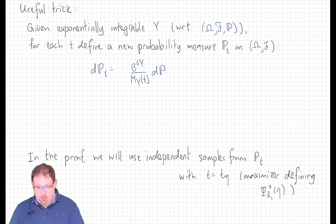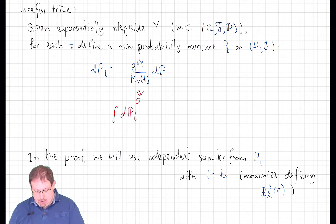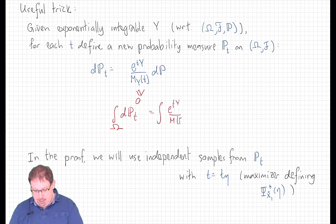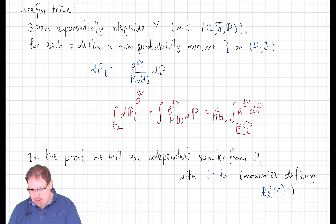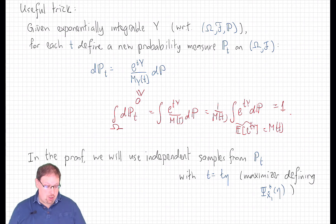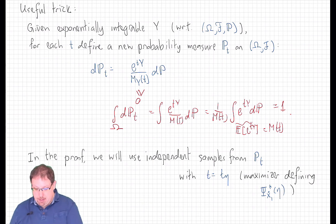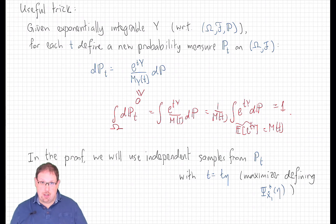This is a non-negative, clearly measurable function. Integrating that putative probability measure over the whole space gives the integral of e to the ty divided by m of t against the original probability measure P. We can pull out the moment generating function m of t, and we're left with the expected value of e to the ty, which is the definition of the moment generating function. So this is indeed a probability measure for each t. In the proof of Cramér's theorem, we're going to sample from this probability measure P_t, where t is chosen to be that maximizer, and the maximizer equation gives us information about the mean of those samples.